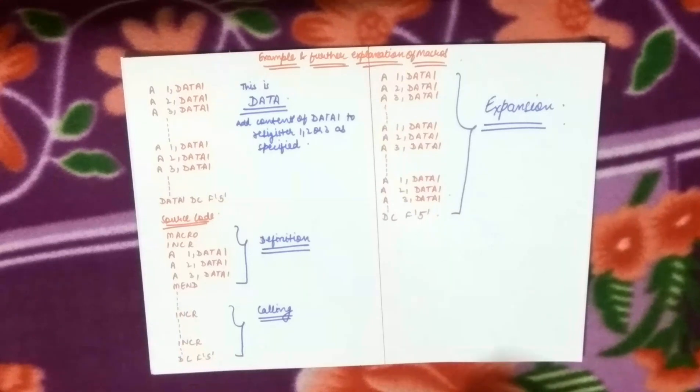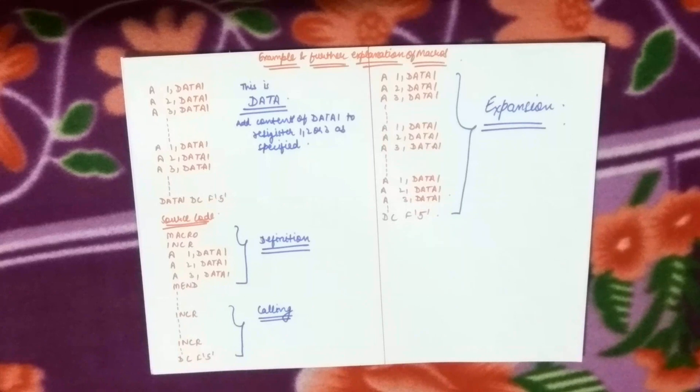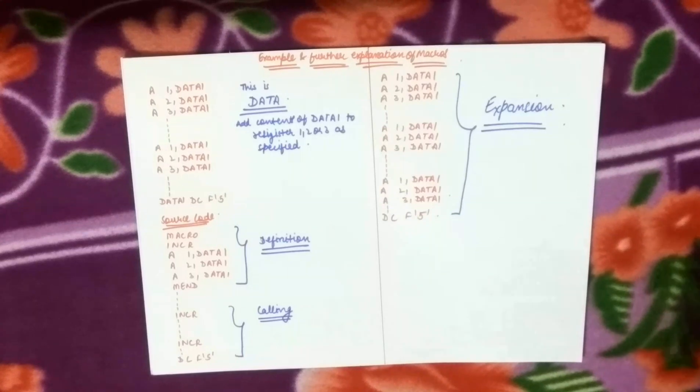So the source code is macro-incr. In the video, I will write a macro. In total, there are 4 parts: the definition of macro, the calling of macro, and the expansion of macro. Now we have seen the data.